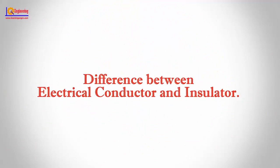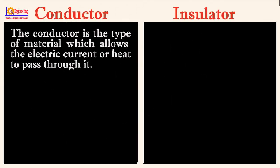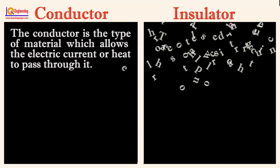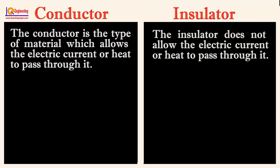In this video I will show you some differences between electrical conductor and insulator. The conductor is that type of material which allows the electric current or heat to pass through it, whereas the insulator does not allow the electric current or heat to pass through it.